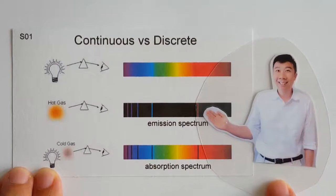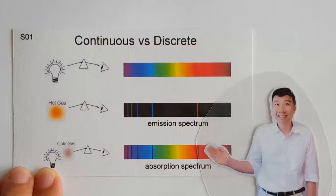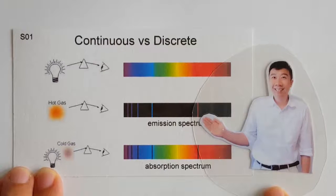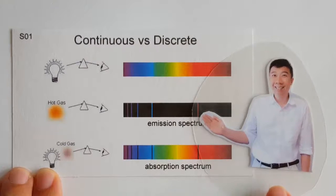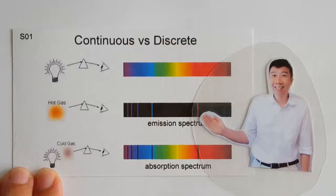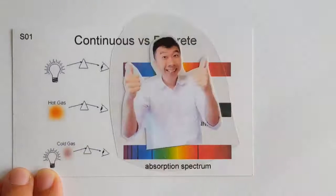So the discrete emission lines and absorption lines strongly suggest that the energy levels of individual atoms are discrete in nature. I'll explain that in another video. Ta-ta!